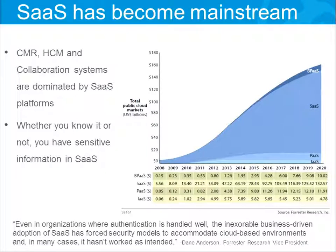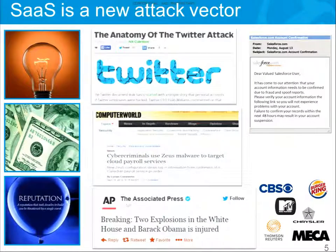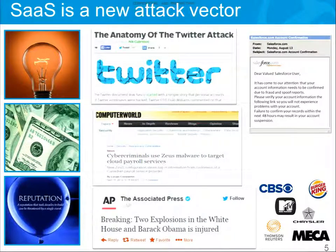SaaS is getting a lot of adoption and is becoming mainstream. If we look at Forrester research, you can see that the market is exploding. There are many areas completely dominated by SaaS, like CRM and HR. Whether you know it or not, you probably have sensitive information inside SaaS in your organization. And it's not only you that's becoming aware of that — attackers are also starting to understand that there's interesting information there. Wherever there's interesting information and opportunities, attacks will come.